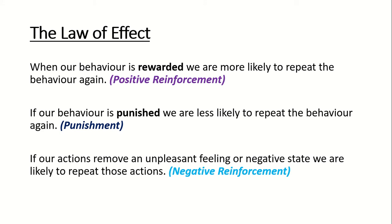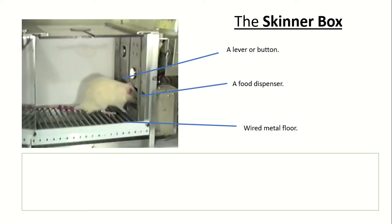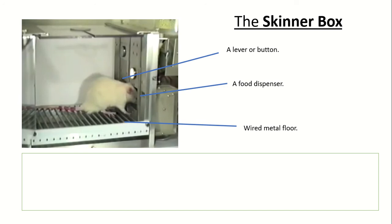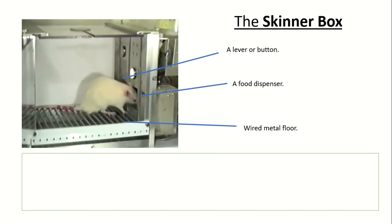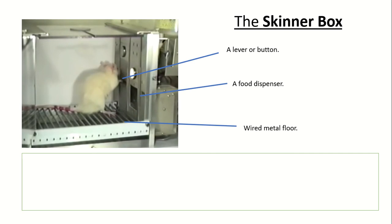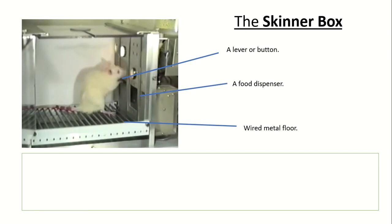Skinner used something called a Skinner Box — just a cage that he used for the purpose of his experiments. Here we have a rat inside a Skinner Box. You can see there are three key elements that make it a Skinner Box and not just a normal cage. The first is a lever or a button — you can see the rat pressing the button, which turns the light on at the top. When the rat presses the button, it moves straight to the food dispenser, because pressing the button releases a pellet of food. There is also a wired metal floor — not a normal plastic base — and the wired metal floor is extremely important.